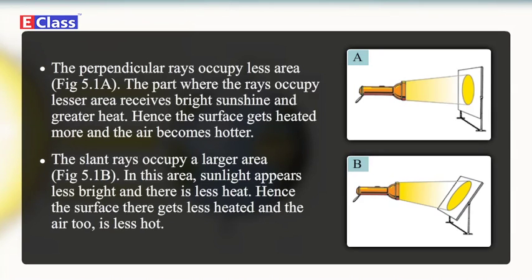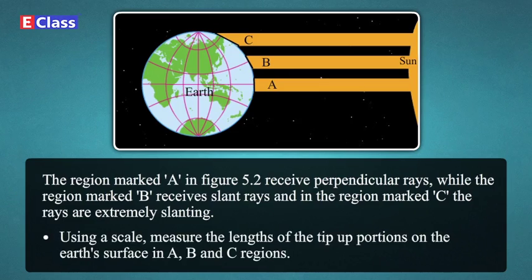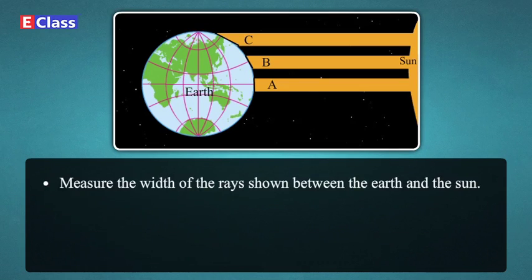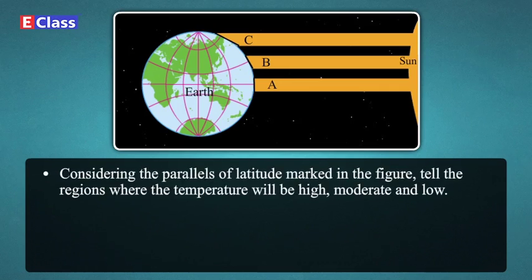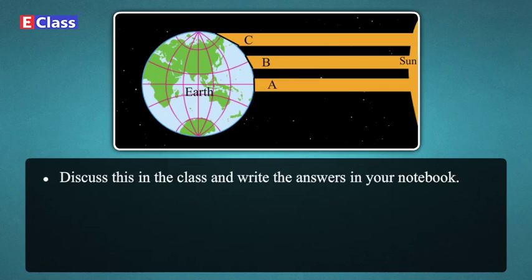Do It Yourself: The region marked A in figure 5.2 receives perpendicular rays, region B receives slant rays, and region C receives extremely slanting rays. Using a scale, measure the length of the lit-up portions on the earth's surface in regions A, B, and C. Measure the width of the rays shown between the earth and the Sun, considering the parallels of latitude marked in the figure. Tell the regions where the temperature will be high, moderate, and low. Answer: Temperature will be high in regions receiving perpendicular sun rays, moderate in regions receiving slant sun rays, and low in regions receiving extremely slanting sun rays.